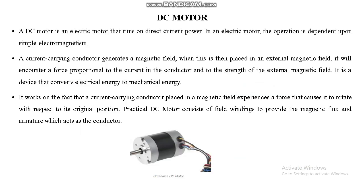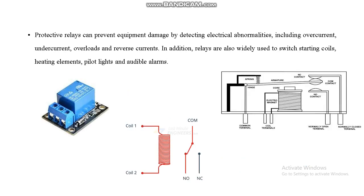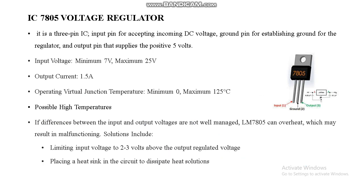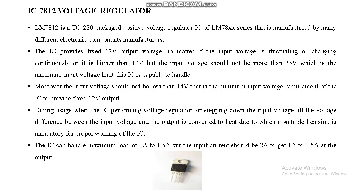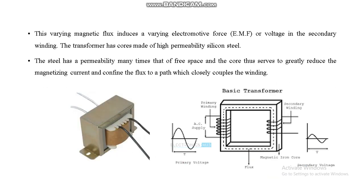The L298N motor driver is used to control the DC motor direction, whether forward or backward. We are using a 12-volt DC motor. Relays can also be used to control the DC motor direction. The IC7805 voltage regulator provides 5 volts as output, and the IC7812 voltage regulator provides 12 volts as output. A 230-volt AC to 12-volt AC step-down transformer is also used.